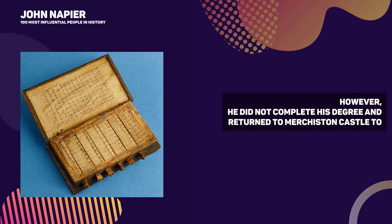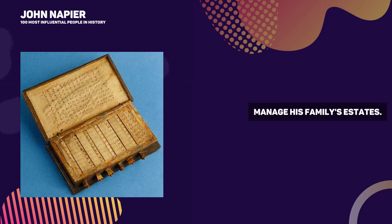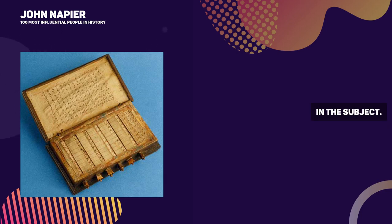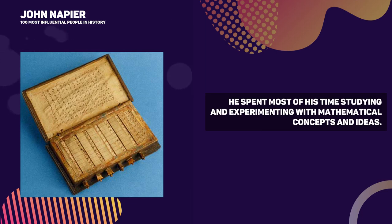However, he did not complete his degree and returned to Murchiston Castle to manage his family's estates. Despite not having a formal education, Napier was a self-taught mathematician and had a deep interest in the subject. He spent most of his time studying and experimenting with mathematical concepts and ideas.